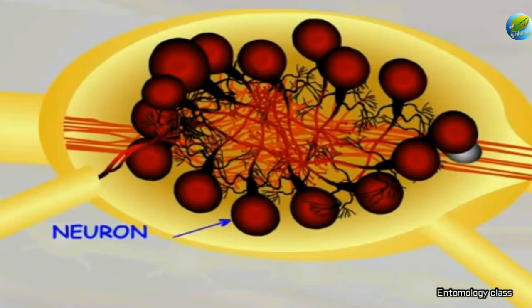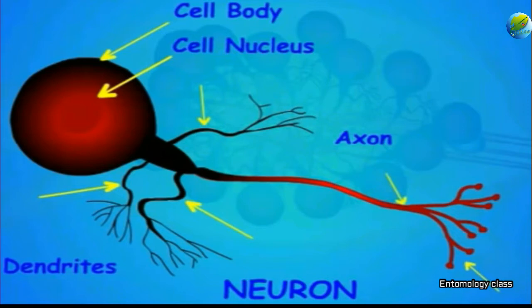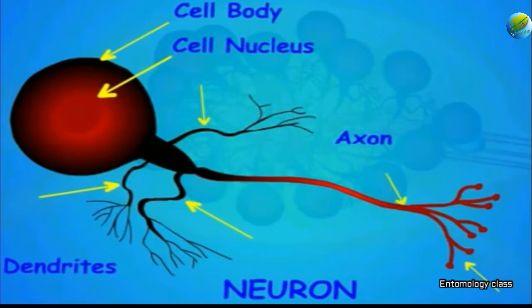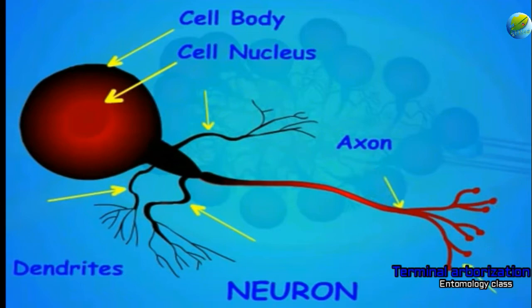Commissures are the rungs of the ladder and intersegmental connectives are the rails. The insect nervous system has a network of specialized cells called neurons that serve as an information highway within the body. Each neuron cell has four major parts: dendrites, cell body, axon, and terminal arborization. Dendrites receive information or impulse from a nearby neuron or sensory organ. The cell body analyzes that information, then shifts it as an impulse to the axon, which transmits it to the next neuron through terminal arborization.